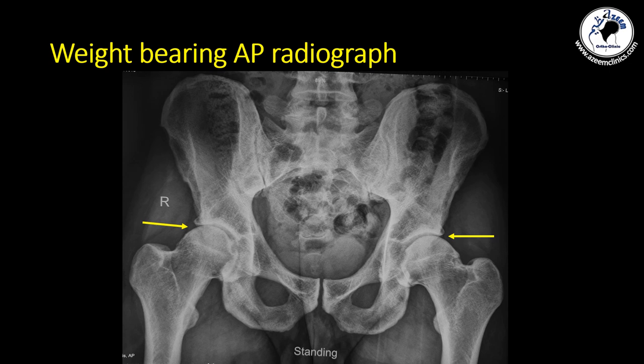I usually start my diagnosis of any hip pathology by asking for weight-bearing radiographs to properly see the joint space. Usually the joint space should be between two to four millimeters. Anything less than two millimeters means that the patient has significant osteoarthritic changes and you have to take care before interfering with conservative treatment.